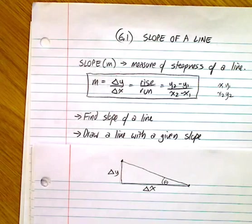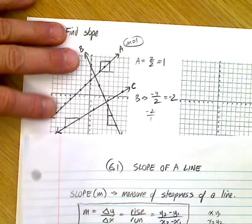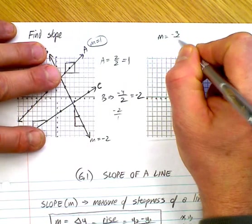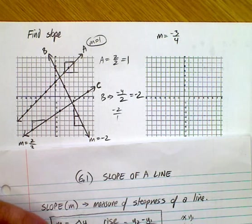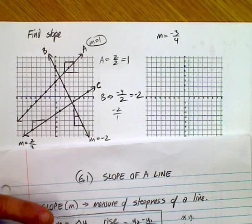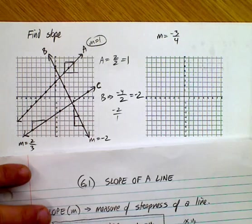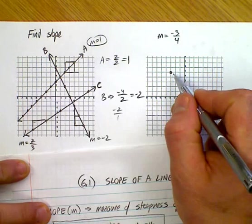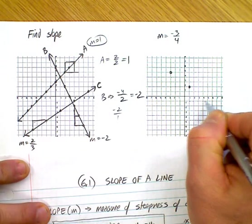So draw a line with a given slope. Say I gave you a slope of negative 3 quarters. Can you draw a line that has a slope of negative 3 quarters? Well, if you wanted to do that, one of the first questions you'd probably ask me is, where do I start? Well, if I'm just looking for a line that has a slope of negative 3 over 4, you can start anywhere. Pick a point. There you go. Negative 3 over 4 means you go down 1, 2, 3, and then over 1, 2, 3, 4. And then down 1, 2, 3, and then over 1, 2, 3, 4.